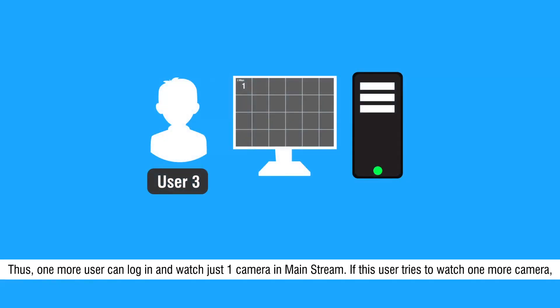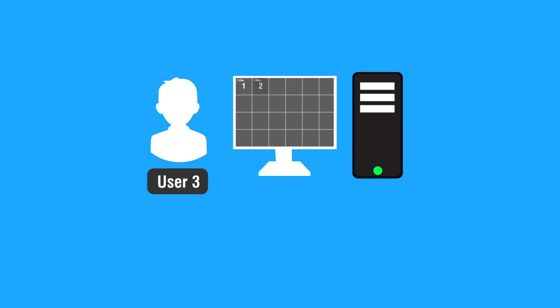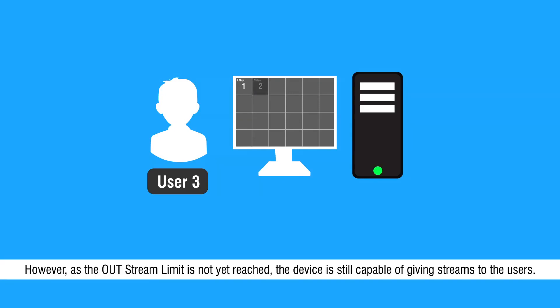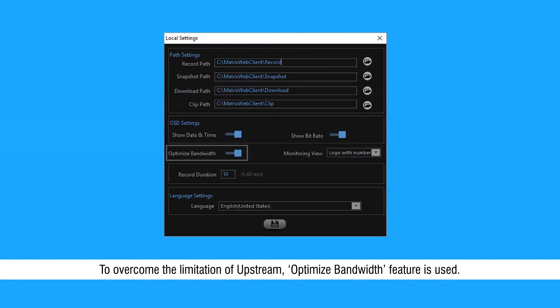Thus one more user can log in and watch just one camera in mainstream. If this user tries to watch one more camera, the device may drop frames or the live view of cameras can get stuck for a while. This is solely because the upstream of the device is reaching its limit. However, as the out-stream limit is not yet reached, the device is still capable of giving streams to the users. To overcome the limitation of upstream, the Optimize Bandwidth feature is used.